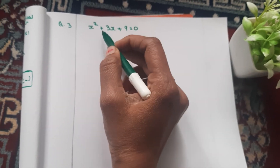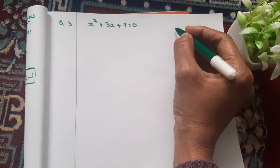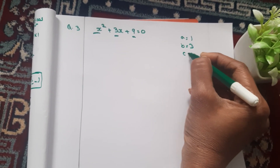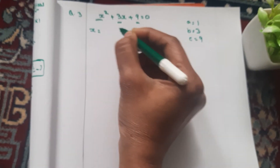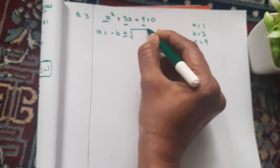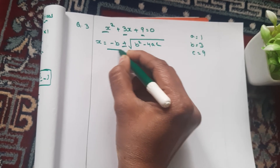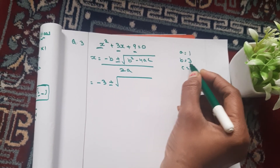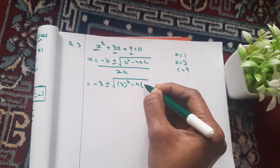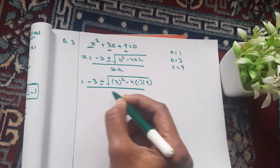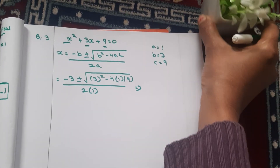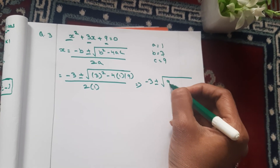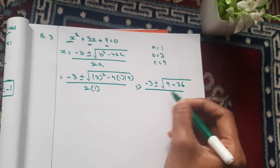The third problem: x squared plus 3x plus 9 is equal to 0. So a value is 1, b value is 3, c value is 9. Then x is equal to minus b plus or minus square root of b squared minus 4ac divided by 2a. Substituting: minus 3 plus or minus square root of 9 minus 36 divided by 2.